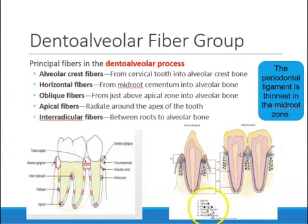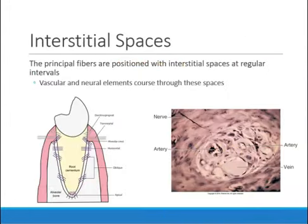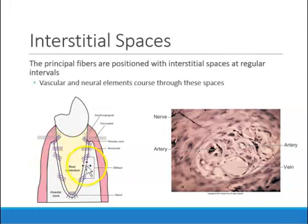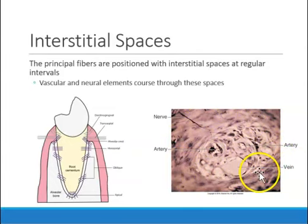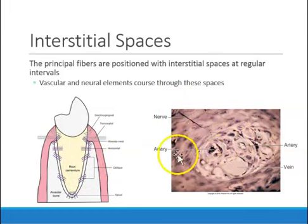The interstitial spaces between the periodontal ligament fibers are very vascular — that's where all the blood supply is. In a microscopic view, you can see nerves within the spaces between the periodontal ligament fibers, along with arteries and veins. It is very vascular in those areas.